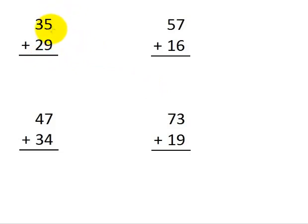To start with this problem here, 35 plus 29, we begin in the ones column, which is this area right here, the ones column, and we're going to add 5 plus 9, which is equal to 14.